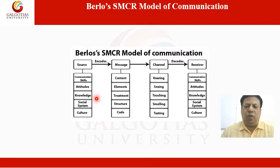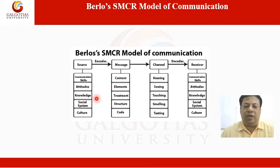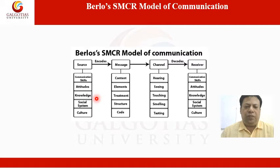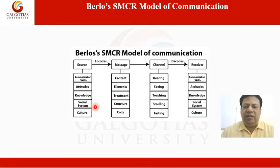The knowledge component is very important as far as the source is concerned. If you feel you are not going to gain any knowledge from the communication, you will not pay proper attention. The knowledge base is one of the important components for the source, because if the source is unable to create any knowledge base through communication, that person is going to deviate from their goal. Social system is also important because receivers who belong to the same social system are more easily able to understand the message.